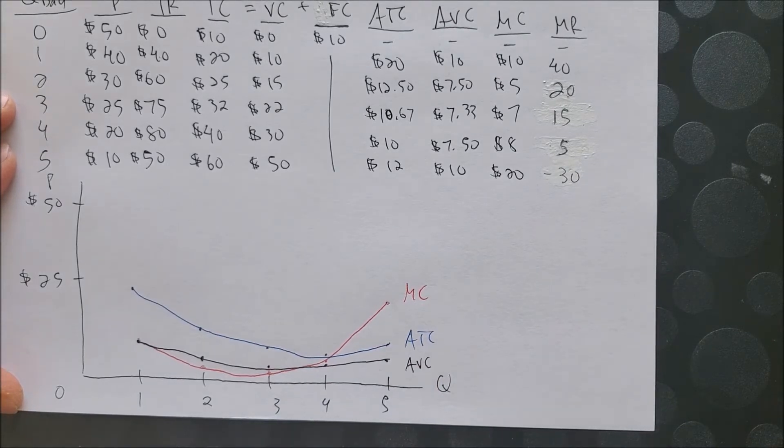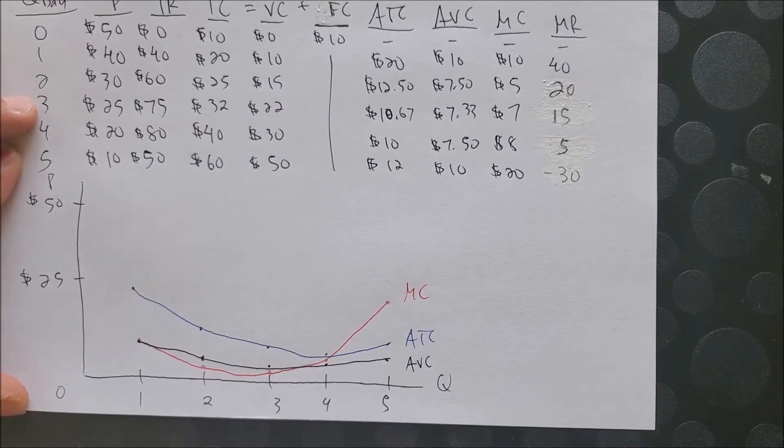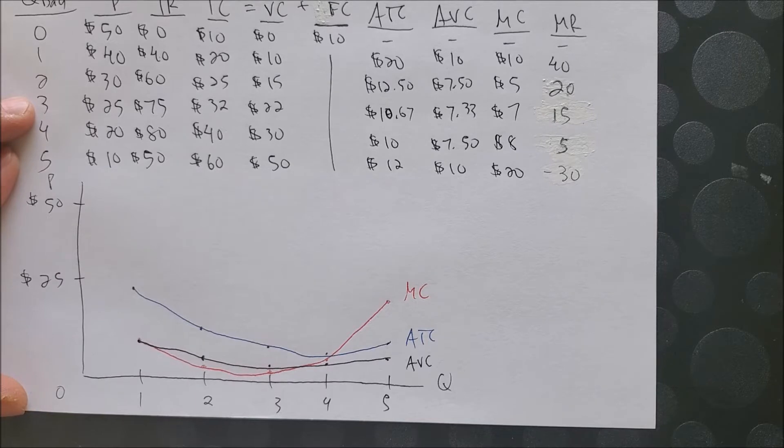Now in the other video when we showed the perfectly competitive market, we saw MR, which is equal to price, as a horizontal line. But now notice that price does not equal MR.